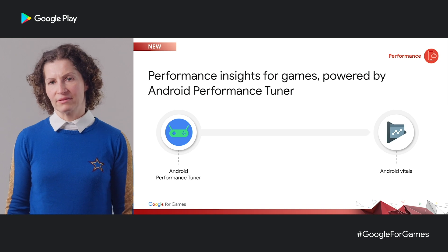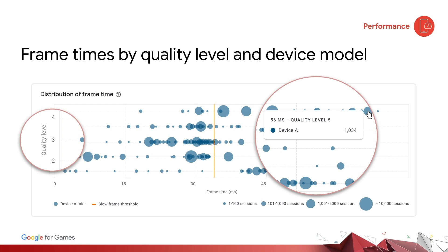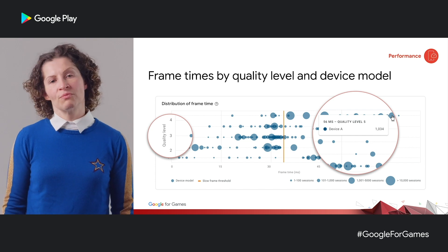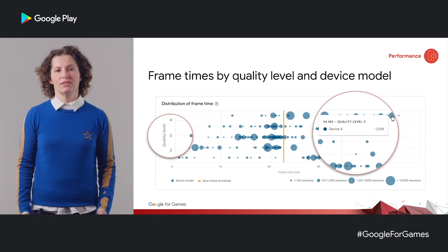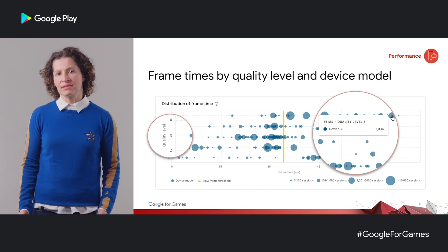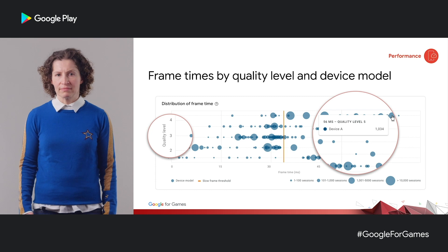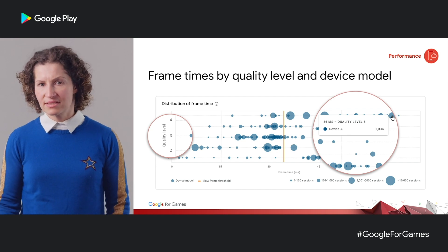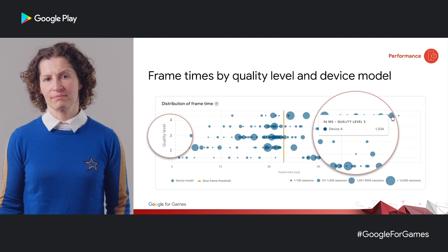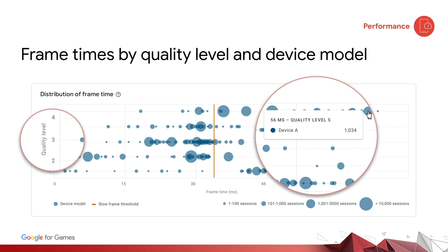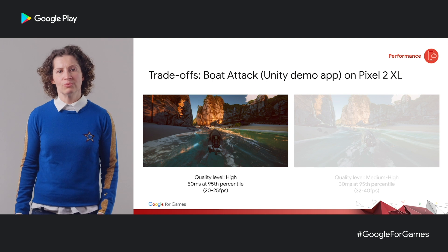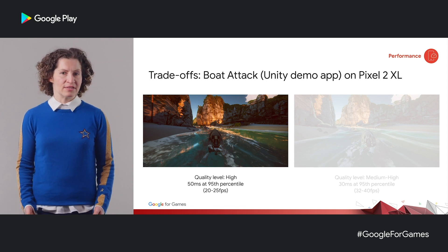Let me show you some of the features we've built. First, we give you a complete view of your frame rate performance across all your users, broken down by the quality level they are on and the device model. The quality levels are ones that you yourself have defined, just like the levels on which we tested Boat Attack. Each row or line on the chart is a quality level, with the lowest level at the bottom. Device models are shown as circles, and the x-axis measures frame time — so lower numbers on the left are fast. The red vertical line in the middle is the target frame time; here it's 33 milliseconds, meaning this game is targeting 30 fps. For example, device A on quality level 5 is running slow — the same situation as the Boat Attack test where we ran the game on a high quality level but saw poor performance.